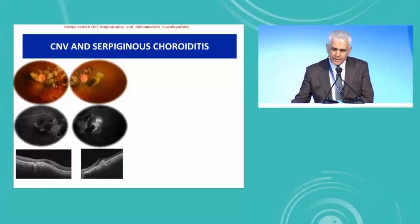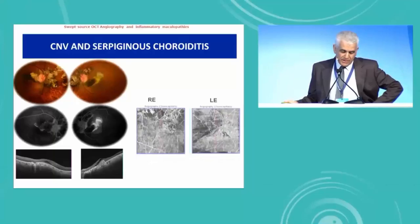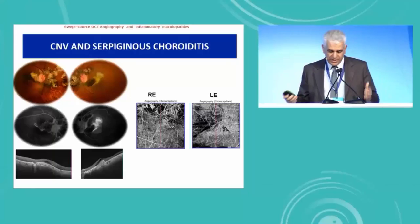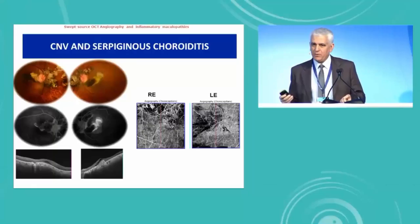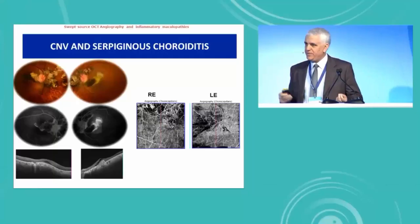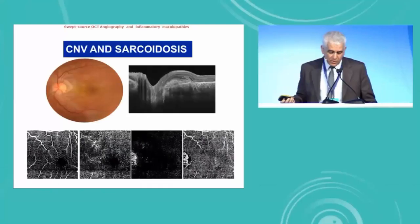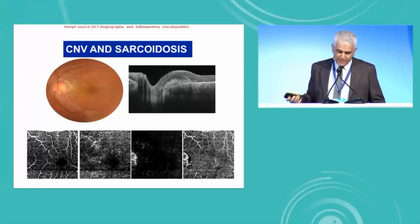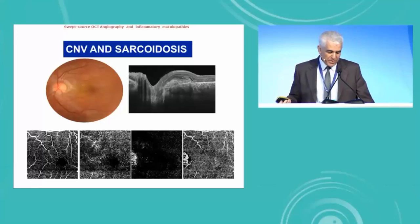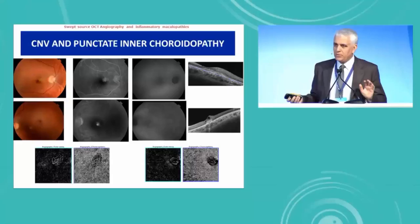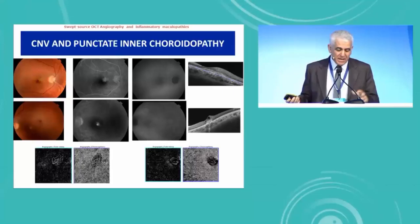Another important role for OCT angiography is the diagnosis of choroidal neovascularization in association with inflammatory conditions. OCT angiography is very important to detect choroidal neovascularization, and in some entities to differentiate between CNV and active lesion. Here, a case of CNV associated with inactive serpiginous choroiditis, CNV associated with sarcoidosis showing capillary changes in the superficial and deep capillary plexus, as well as a choroidal neovascular membrane adjacent to the optic disc. This is also a case of bilateral choroidal neovascularization associated with inflammatory choroidopathy, probably a PIC.